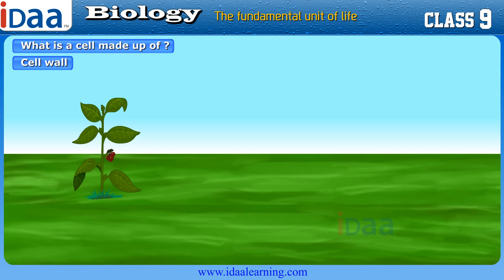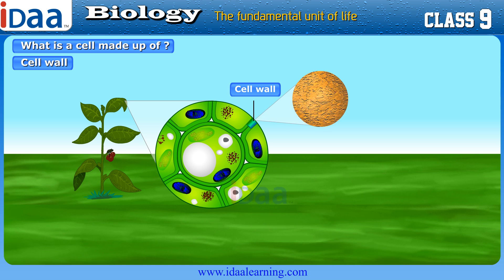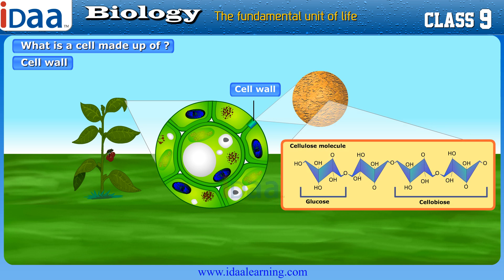Cell wall is seen in plant cells. In a plant cell, there is an extra layer outside the cell membrane. This is known as the cell wall. The plant cell wall is made up of a complex substance called cellulose, which gives strength to the plants.